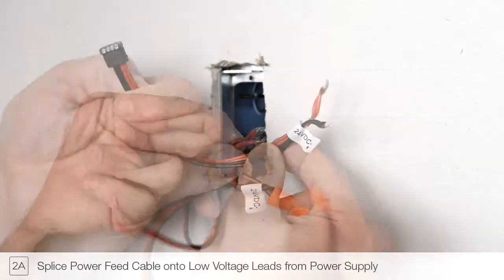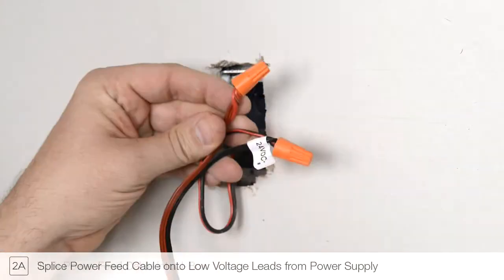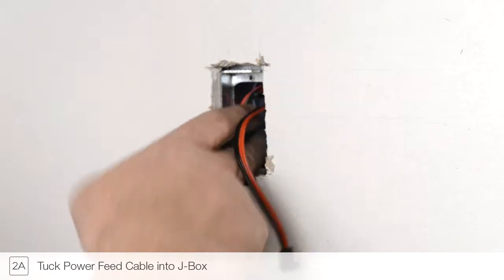Splice the included power feed cable to the low voltage power wires. Place all electrical connections into the junction box.